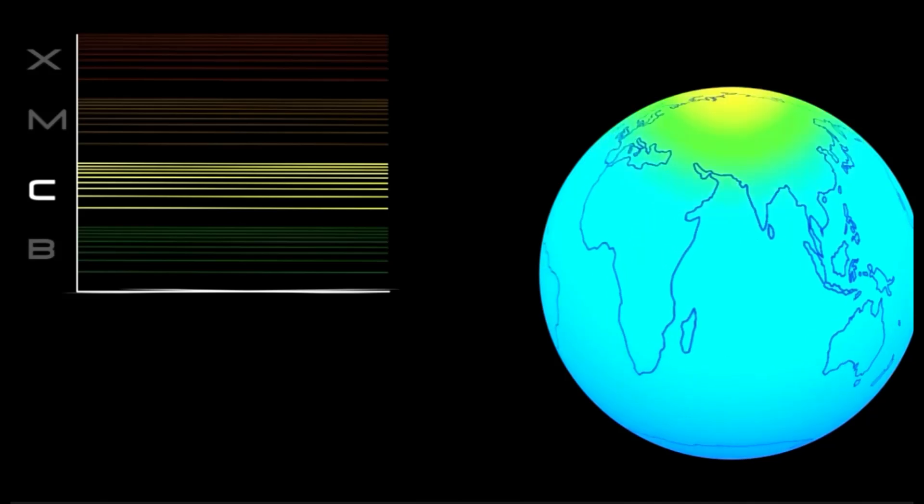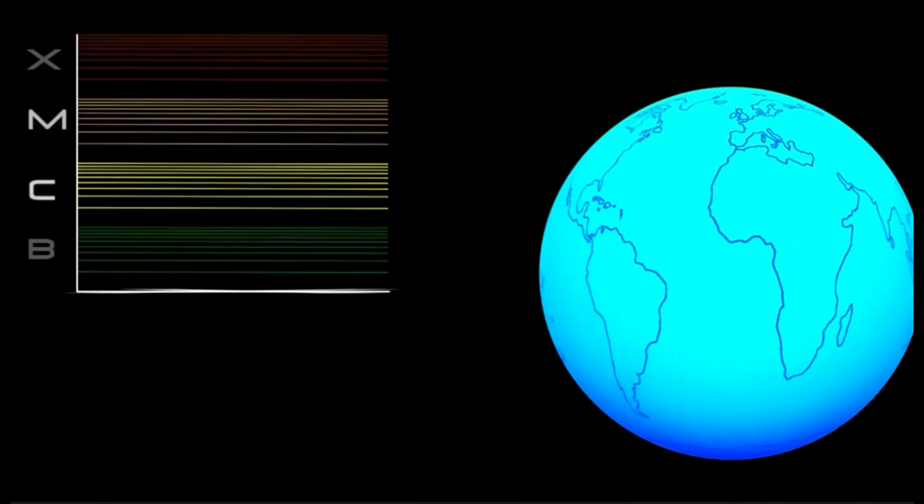C-class flares are too weak to noticeably affect Earth. M-class flares can cause brief radio blackouts at the poles and minor radiation storms that might endanger astronauts.